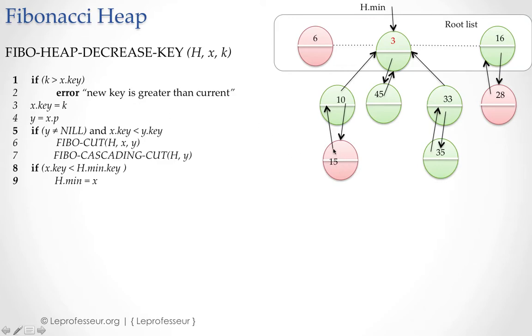First of all we want to check whether the new key value is lower than the current key value of the node. If it is not lower, you just simply exit out because you want to decrease it, and if not then you go ahead and execute line number 3 and 4.